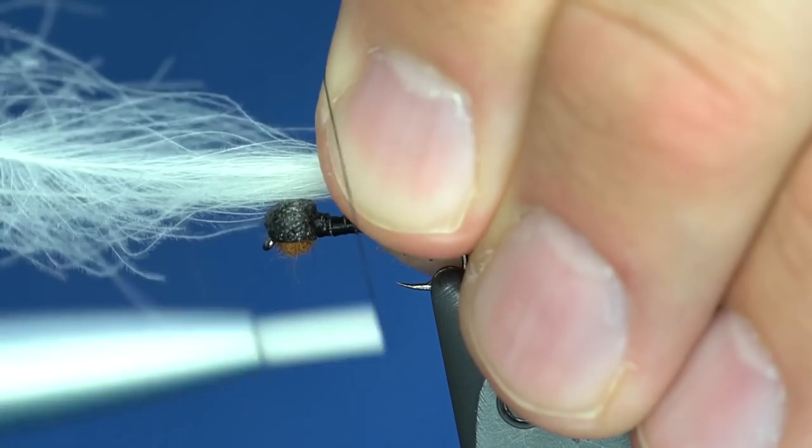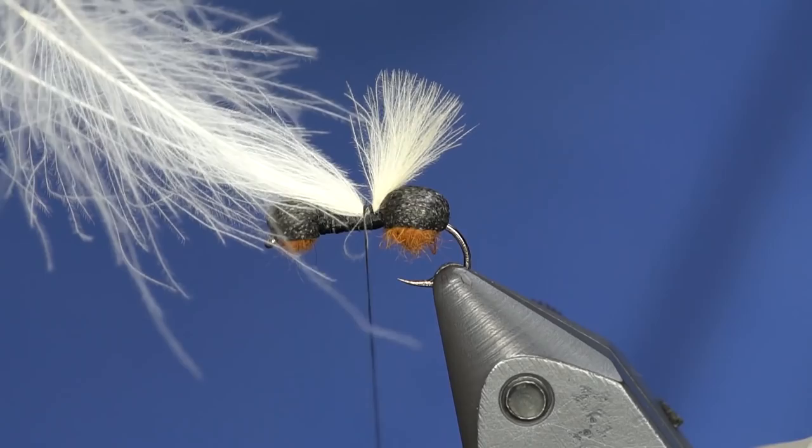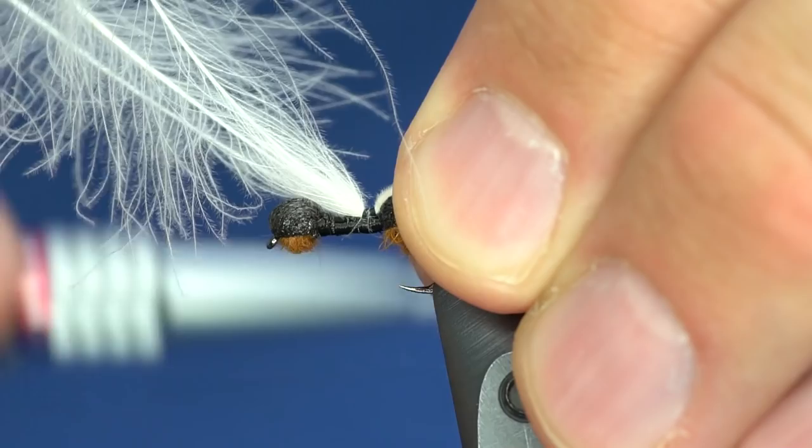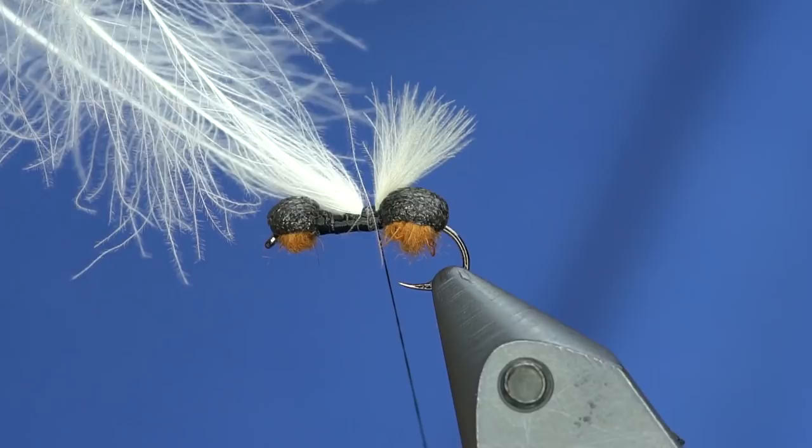Just like that. So I'm going to wrap forward a little bit and then take the rest of these. Well, I'll wrap forward so you can see there's kind of a band of thread here. Then I take my thread and go to the very back right where I tied that wing in.